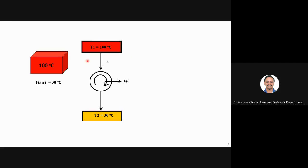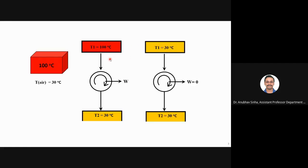This is not an infinite reservoir, so after some time the temperature will come down. At some point it also reaches 30 degrees Celsius — the same as the atmosphere. Can I extract any work now? No, because at the same temperature the cycle will not run; I cannot get any work output.